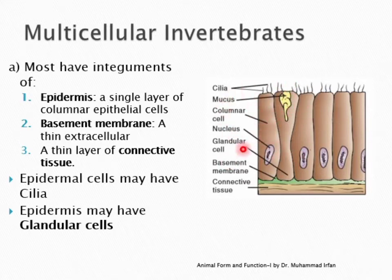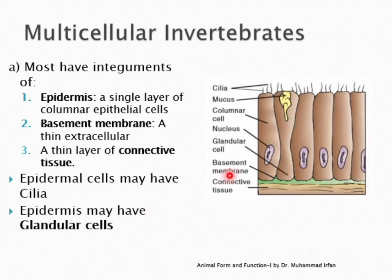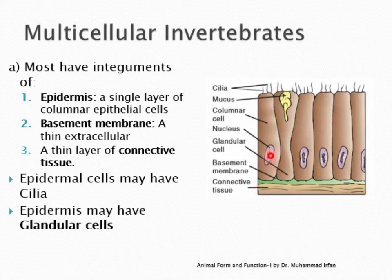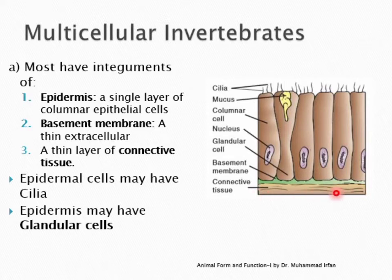Simple epithelium can be simple columnar, simple cuboidal, or simple squamous. Stratified epithelium can be stratified cuboidal, stratified columnar, or stratified squamous. Epithelial tissue has the characteristic that it does not have any blood vessels in it, and there are very few nerves. Because it is living tissue, it mostly has connective tissue beneath the epithelial cell layers. Connective tissue connects two different types of tissues — for example, connecting epithelial tissue to muscles beneath.